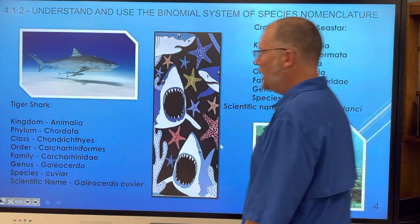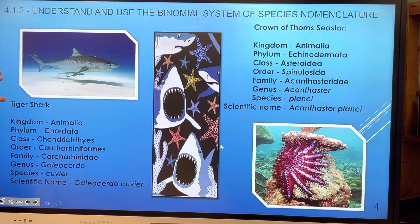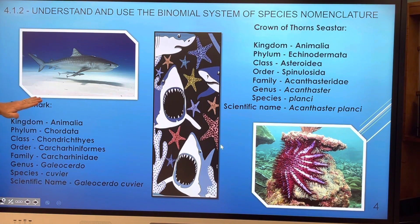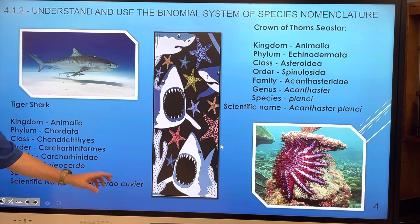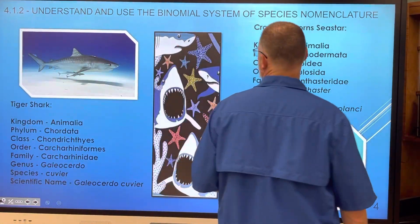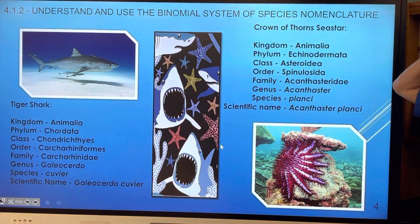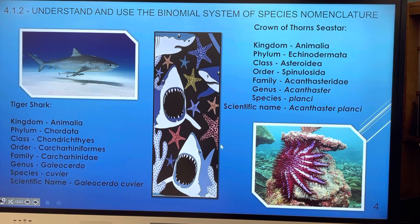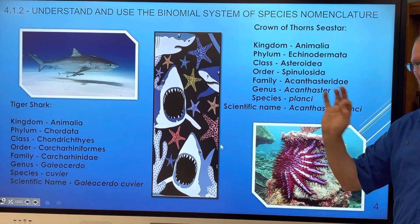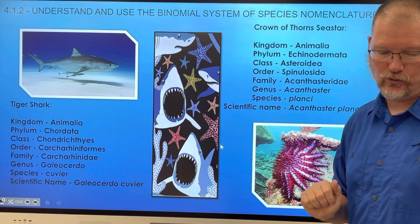Here are two more examples. Here's a tiger shark — going down kingdom, phylum, class, order, family, genus, species until you get to the binomial nomenclature: capital G, lowercase c, italicized because it's typed. And over here we have the crown of thorns sea star — again, this is how they are classified: capital A, acanthaster, planci, with a lowercase p. If handwritten, remember to underline them.